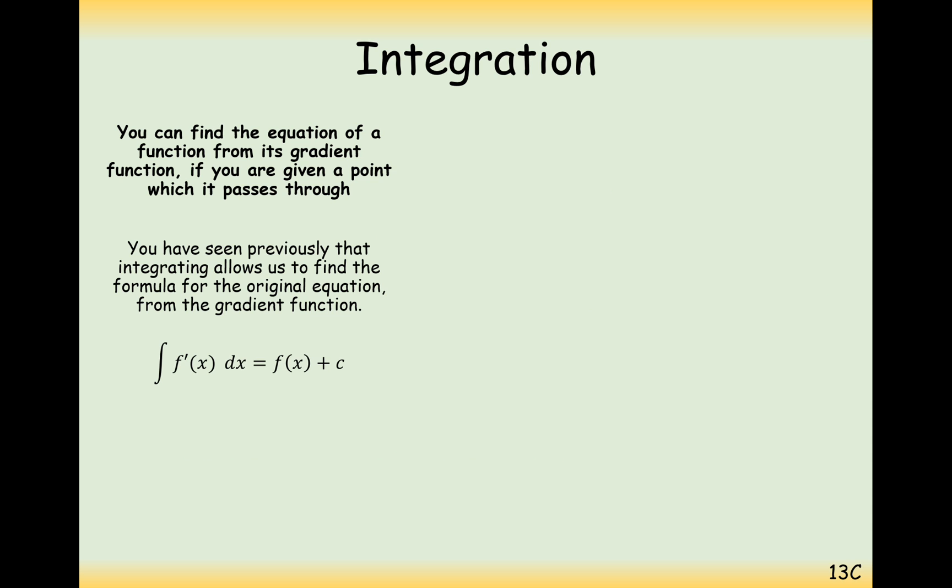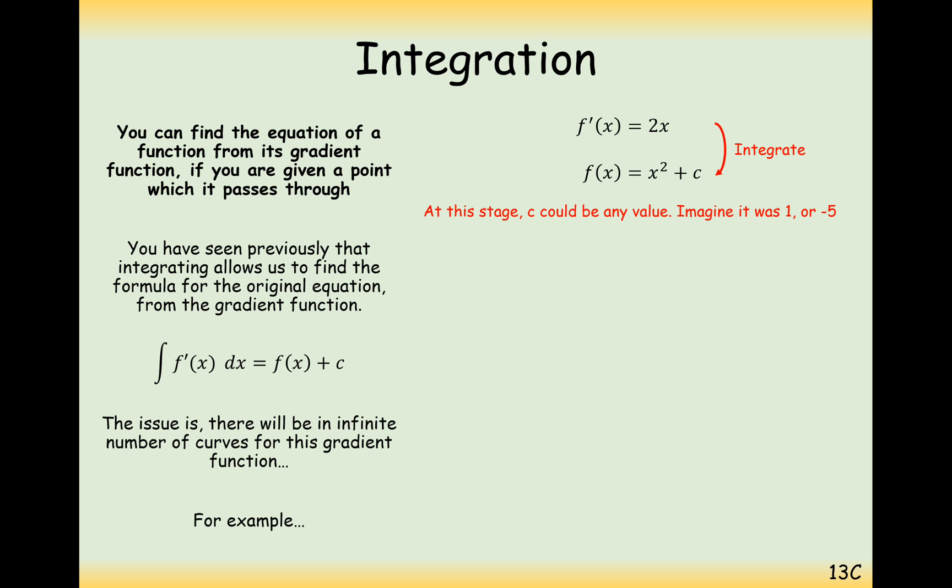Previously we worked out the integral of the gradient function was equal to the original function plus c and we never really worked out what that plus c was. For example, if we've got the gradient function is equal to 2x then we know the function is equal to x squared plus c but we don't know what that c is. If c was 1 or minus 5, it could be this function here or this function here, two completely different functions.